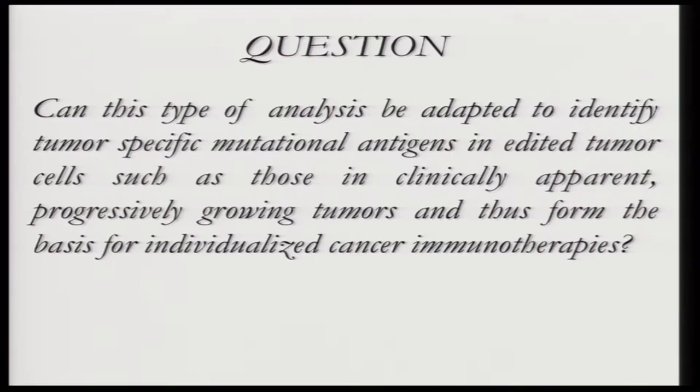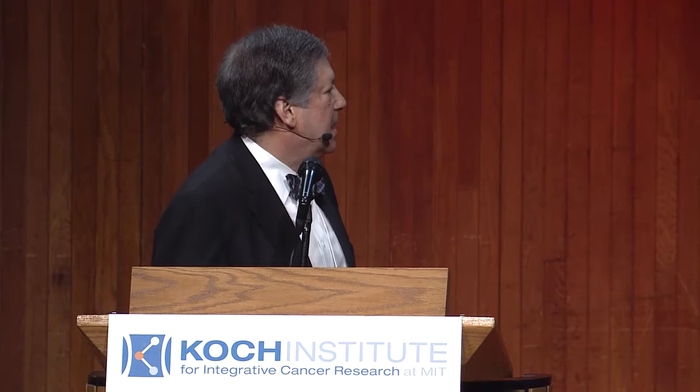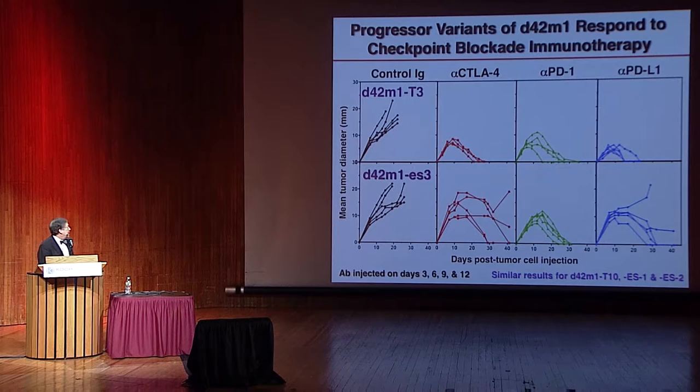But it also primed us for the next question. Can this type of analysis be adapted to identify tumor-specific mutational antigens in clinically apparent edited tumors — the kinds of progressively growing cancers that could form the basis for individualized cancer immunotherapies? That could mean rethinking cancer vaccines made with mutant tumor-specific antigens as having therapeutic value, either by themselves or together with checkpoint blockade or adoptive T-cell therapy. So I'd like to spend the rest of this talk telling you where we are with this.